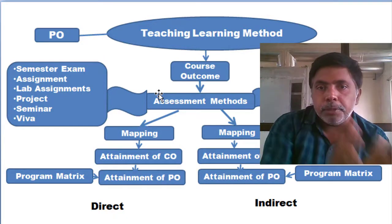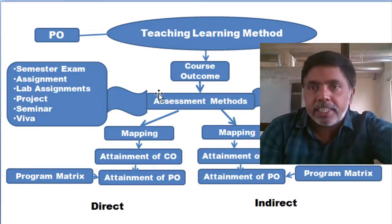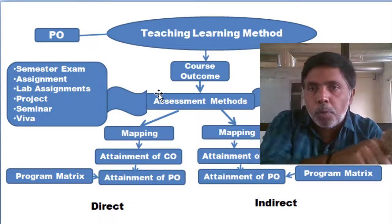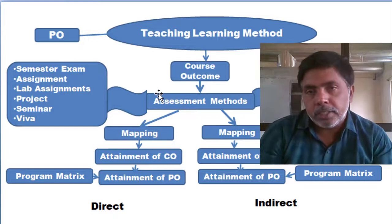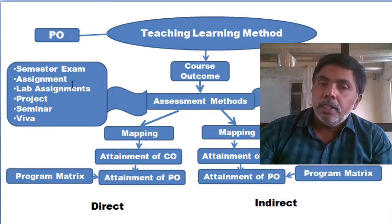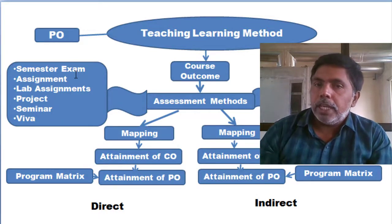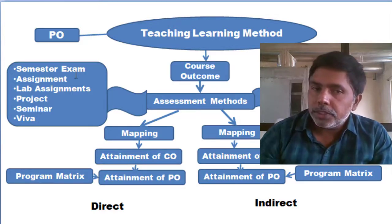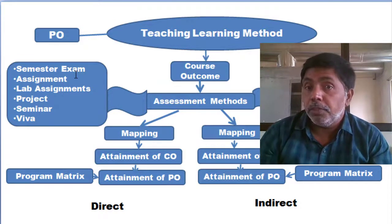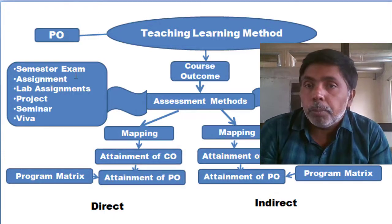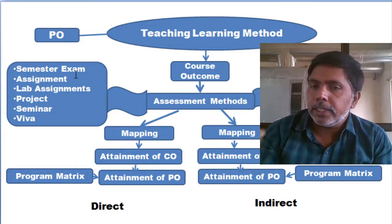A combination of direct and indirect methods is used to assess how much of our target we achieved. Direct methods include semester exams — mid exams and end exams — assignments, lab assignments, projects, and seminars. Every semester a comprehensive assessment is also conducted to see what the student has gained overall.